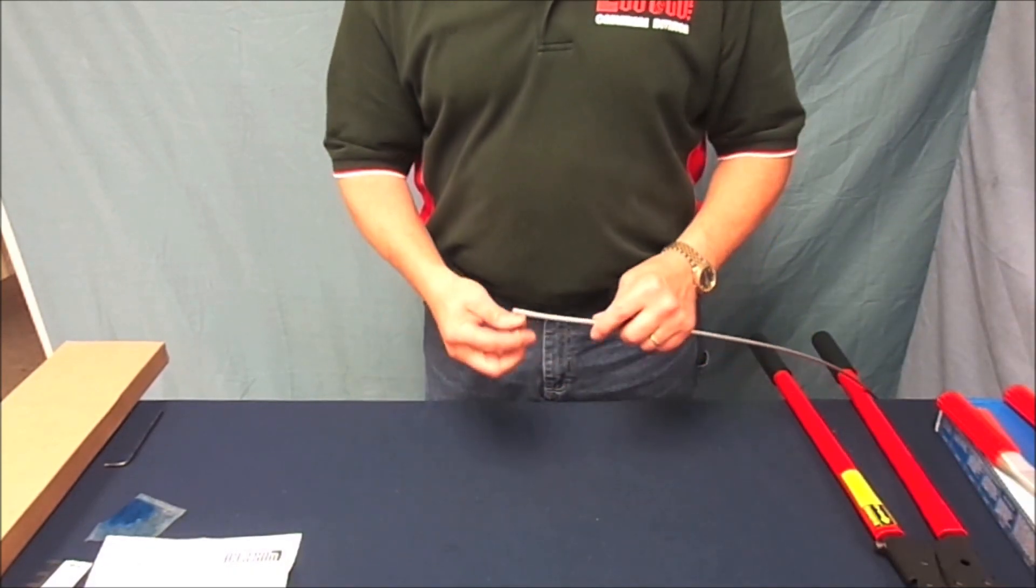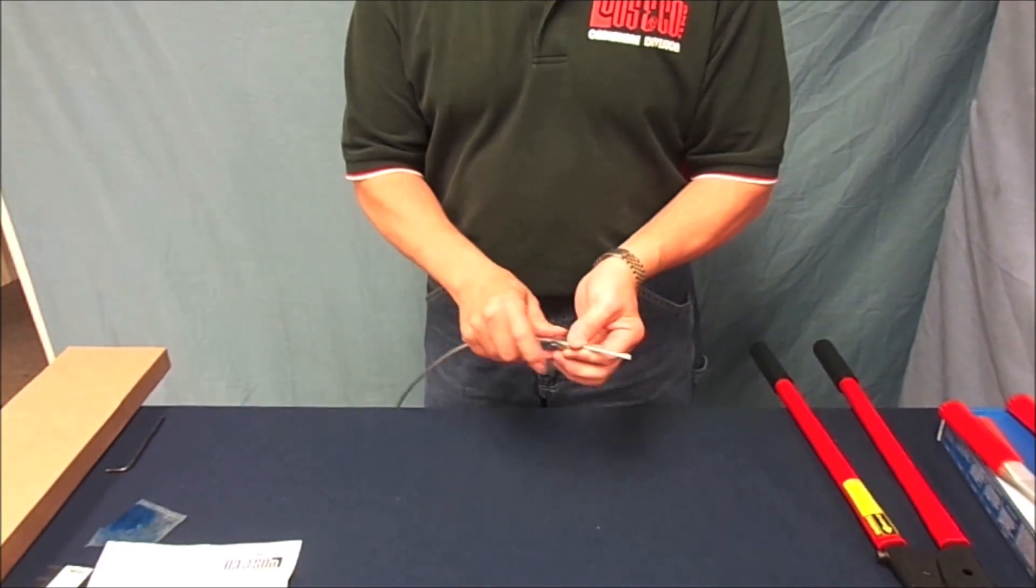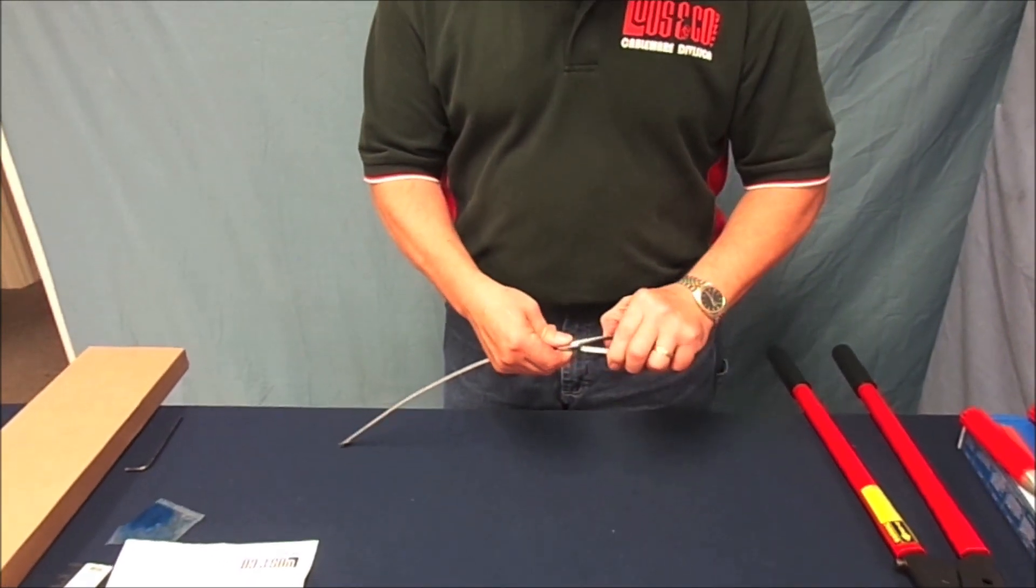For this demonstration we will be making a loop. You will notice that the cable easily passes through the oval sleeve and can easily be formed into a loop.